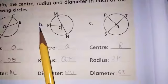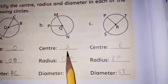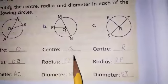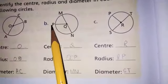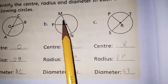B: Center point is Q. Radius is QP. Diameter MN.